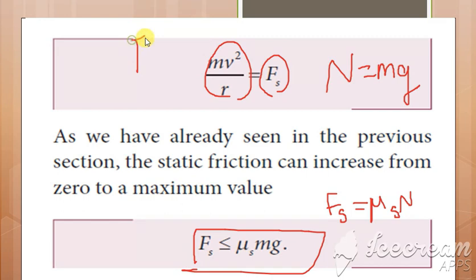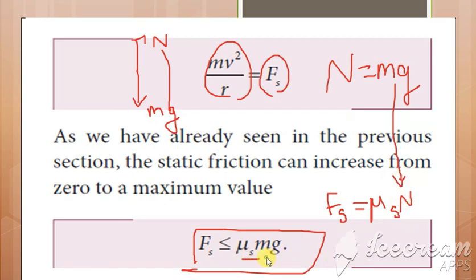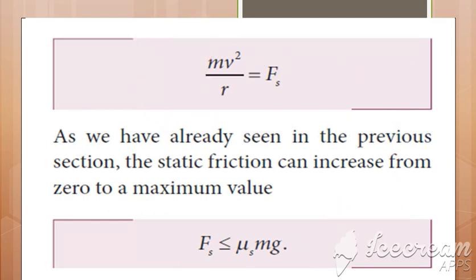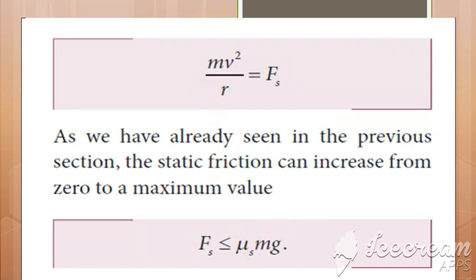Because normal force acts upward and gravitational force acts downward, both acting along the y-axis, we write N = mg. Substituting into the friction formula gives fs = μₛ × m × g. The condition is fs ≤ μₛmg, because frictional force is always less than or equal to this maximum value. Therefore: mv²/r ≤ μₛmg.